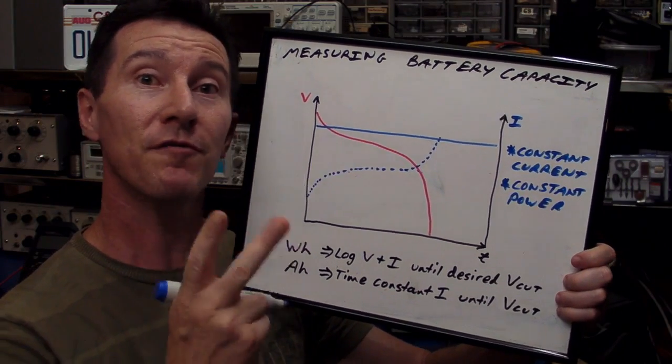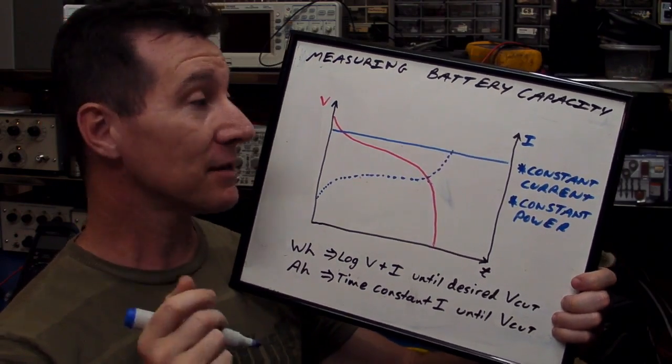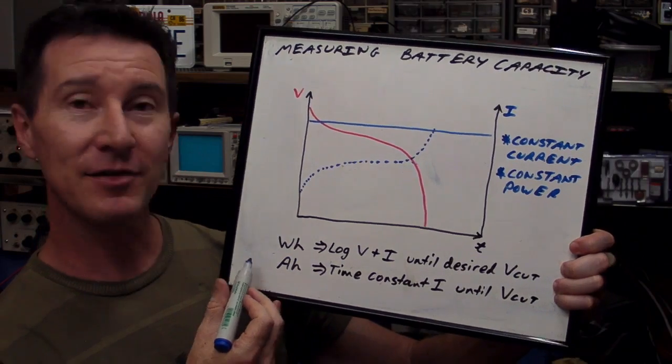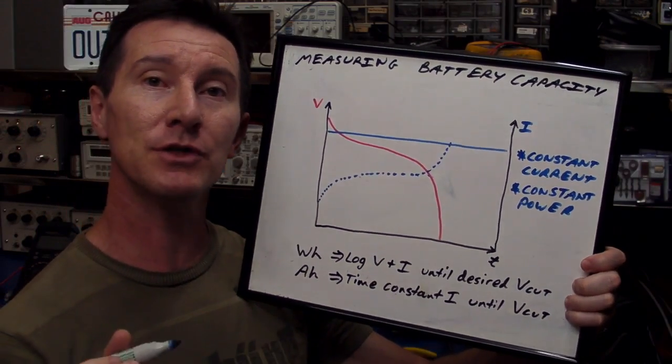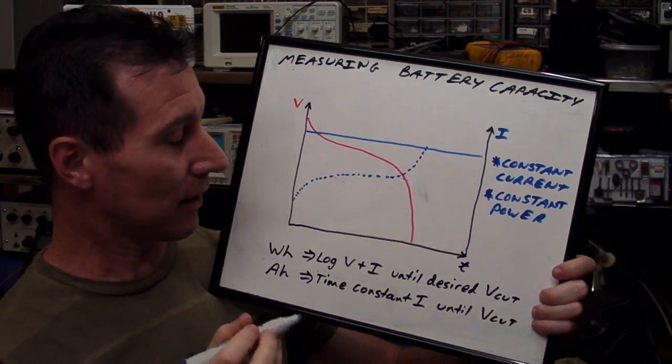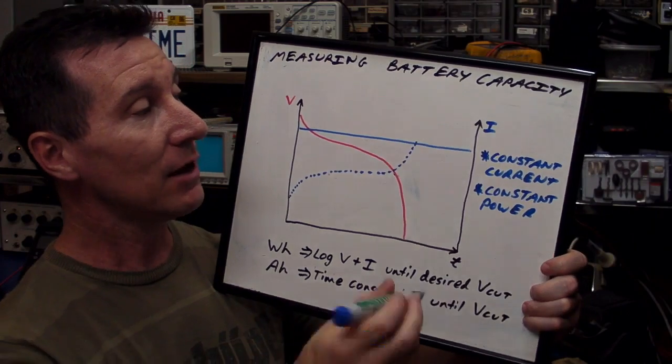The previous blog was a tutorial on battery capacity. I thought I'd follow that up with a quick practical demonstration of how to measure battery capacity. As I mentioned previously, there's two different ways to measure or specify battery capacity. The first one is watt-hours, and the second one is amp-hours. Amp-hours is a more simplistic figure as I explained in the previous blog, but the true capacity is measured in watt-hours.